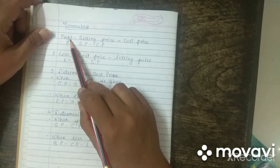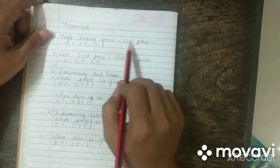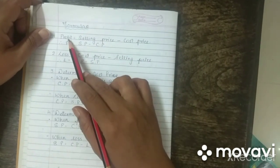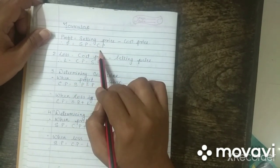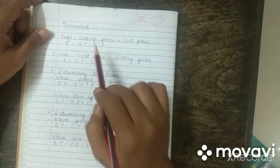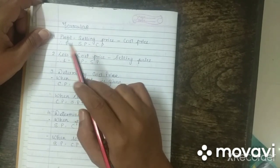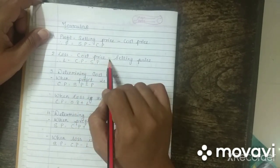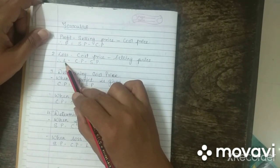To find the profit: Selling Price minus Cost Price gives you the profit. These are the abbreviations: SP for selling price, CP for cost price. To find a loss: Cost Price minus Selling Price will give you the loss.